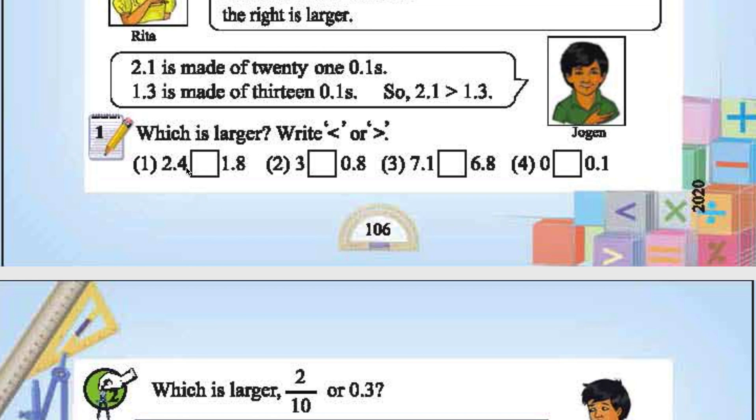Which is larger? 2.4 is larger. Let's use the symbol greater than and less than. 2.4 is greater than 1.8. As we already know, 3 is greater than 0.8. 0.8 is less than 1. So 3 is greater than 1. So 3 is greater than 0.8.